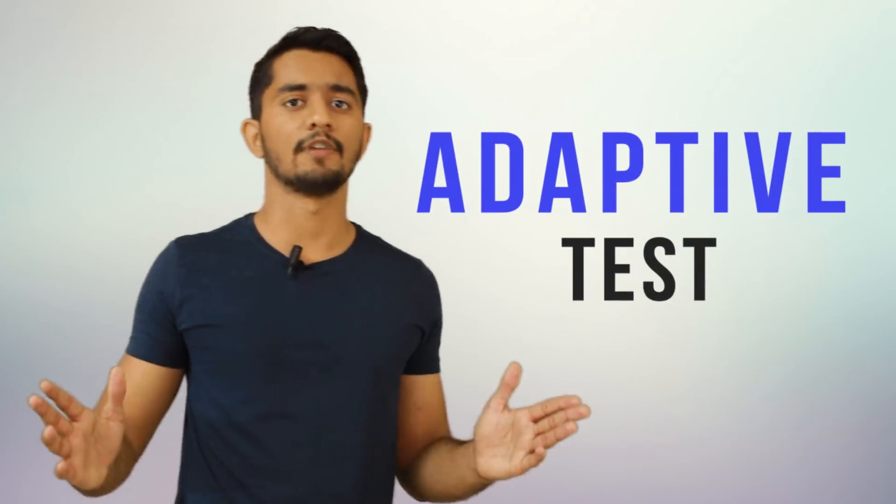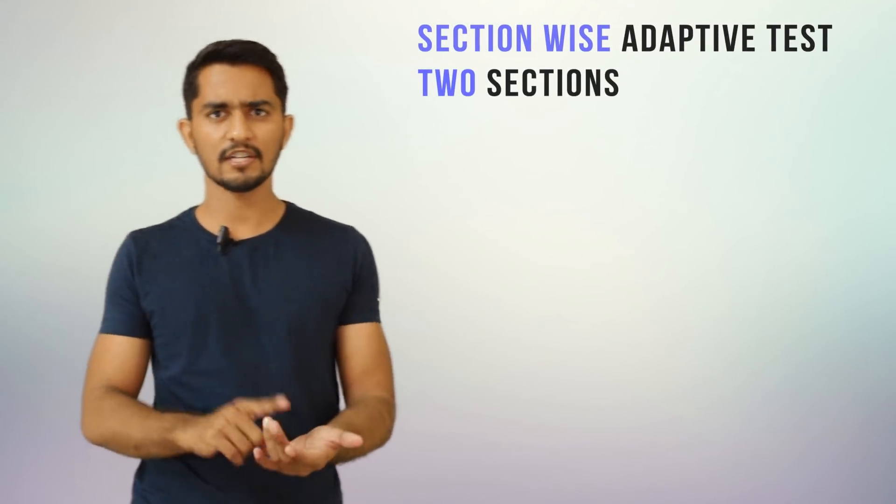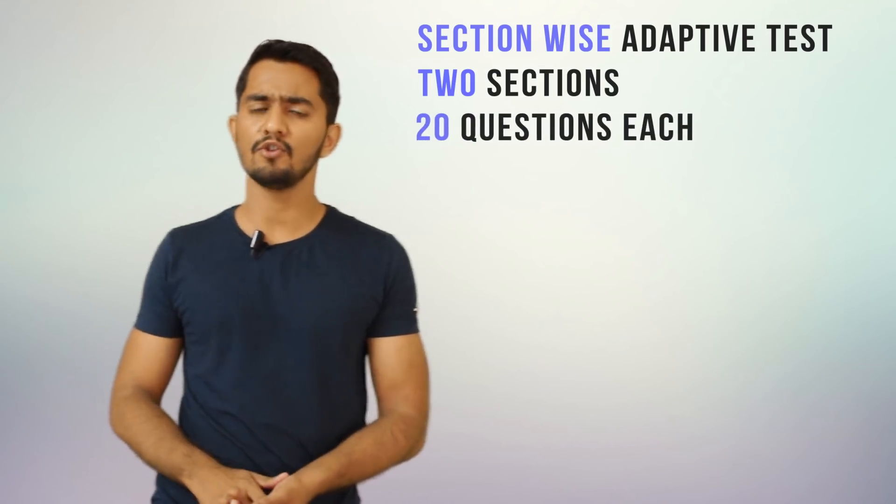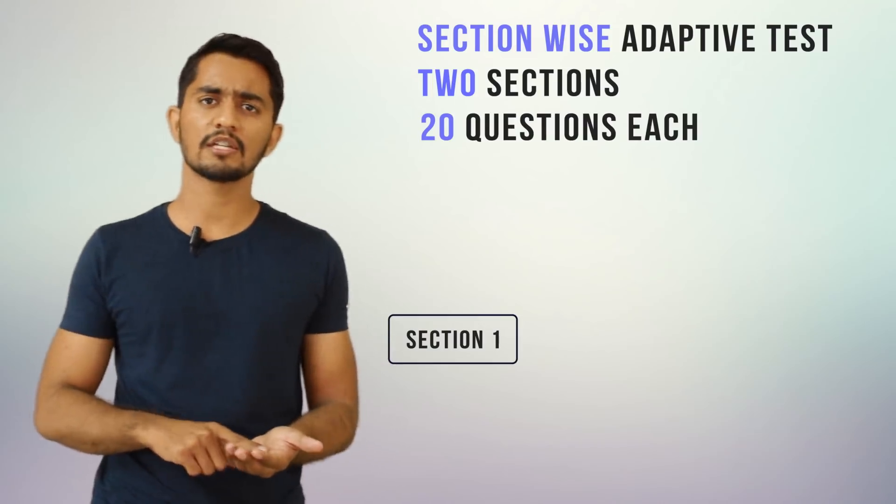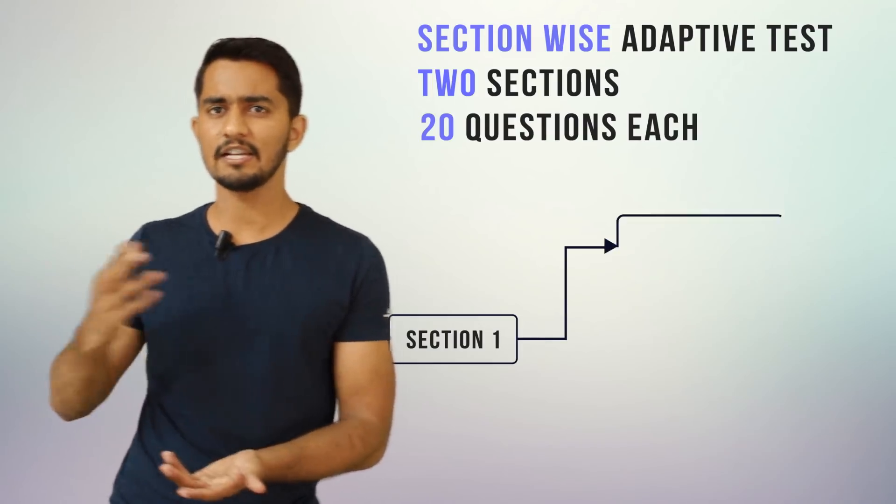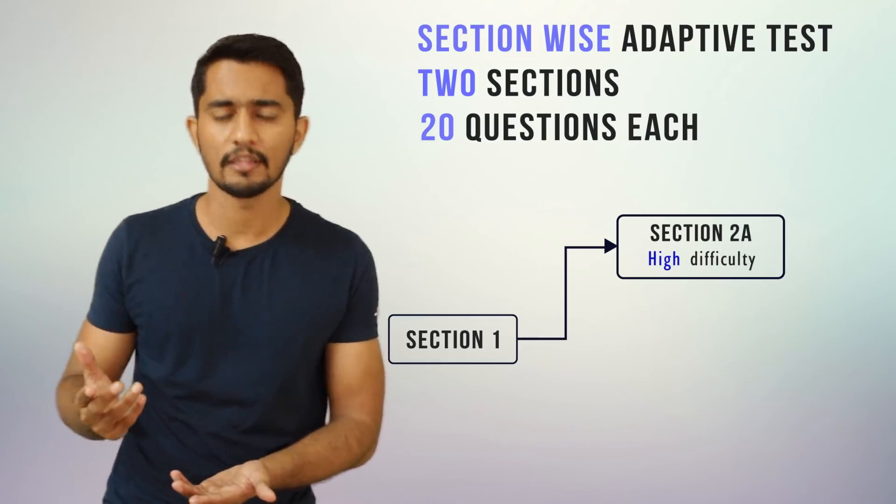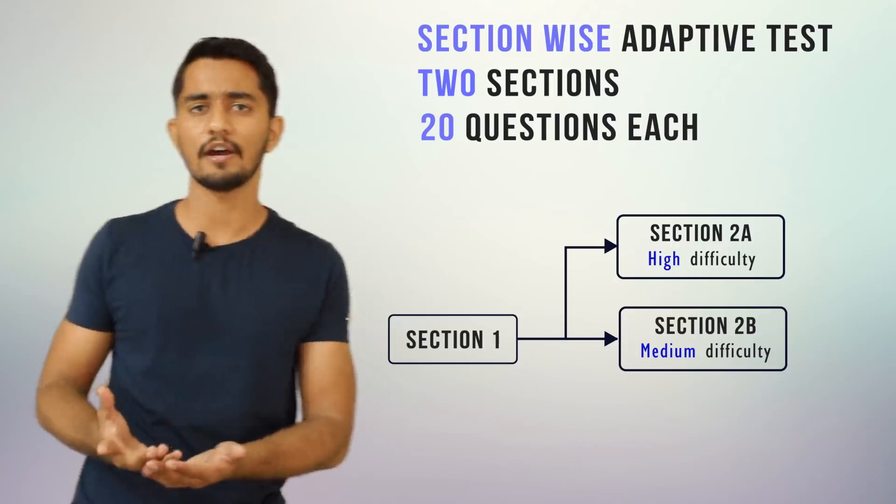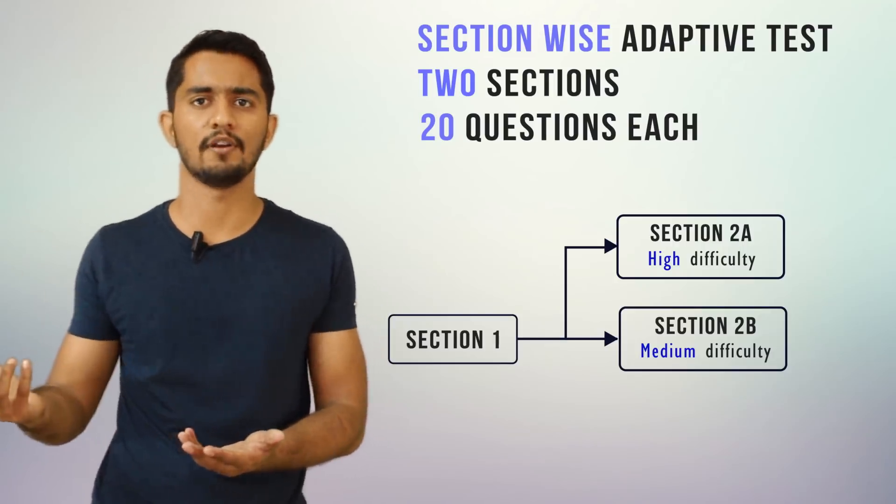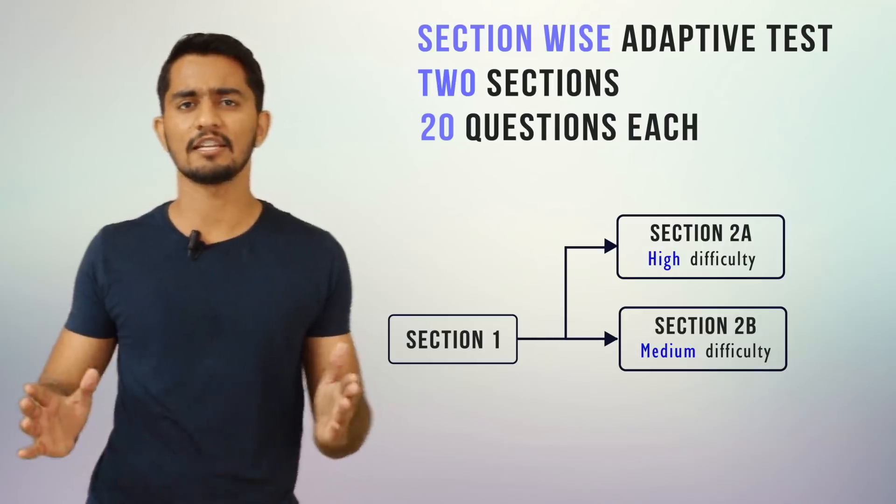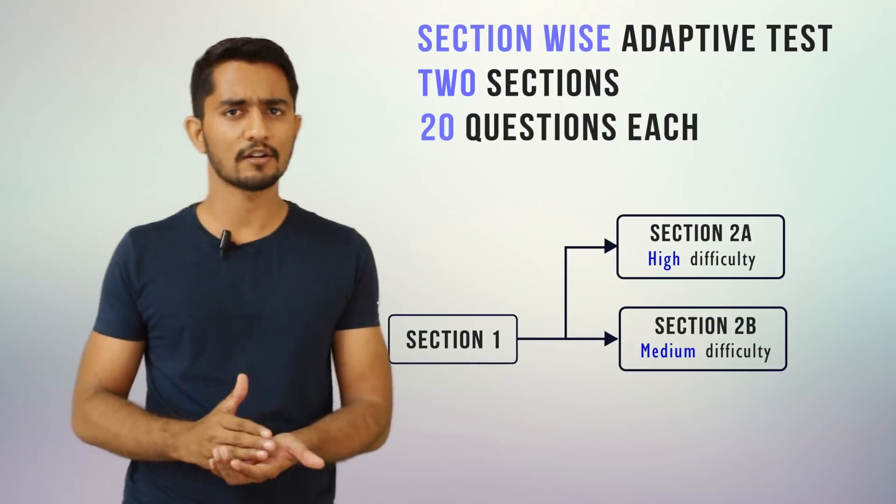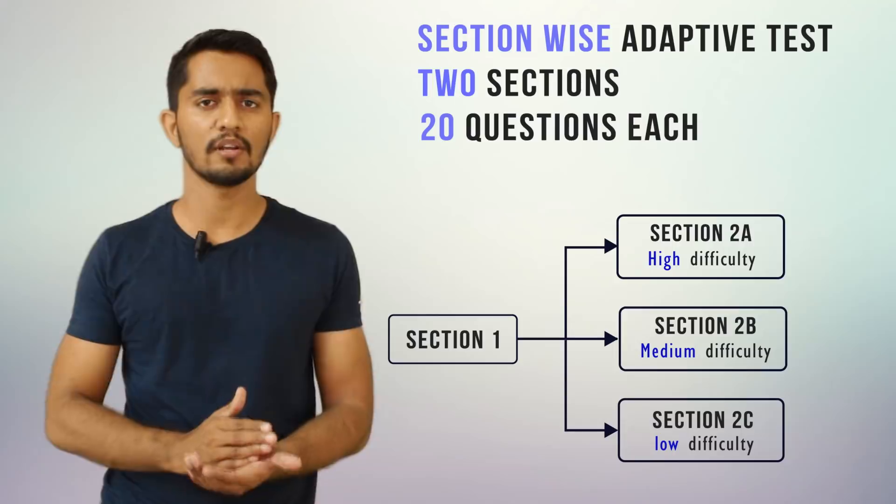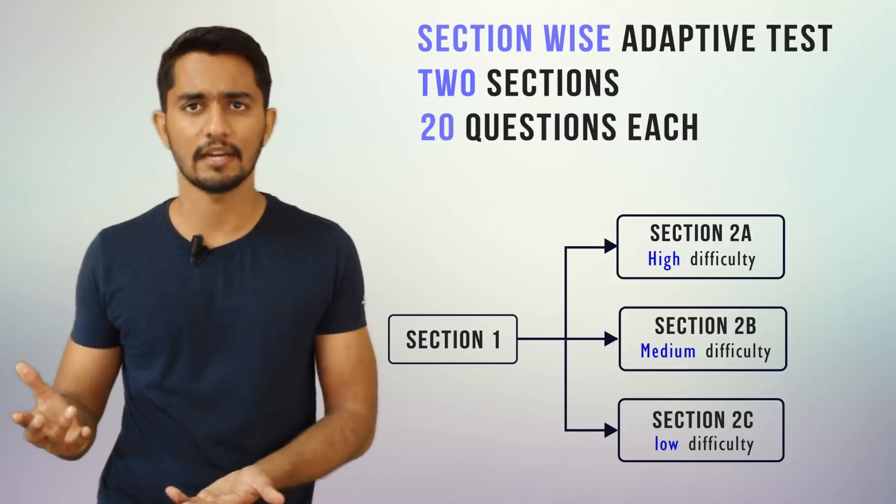Now let's understand GRE as an adaptive test. GRE is a section-wise adaptive test. There are two sections in quants. The first section is of moderate difficulty. In each section you will have to answer 20 questions. In the first section, which is of moderate difficulty, if you answer 16 or more questions correctly, the second section you will get would be harder, the difficult section. If you answer 10 to 15 questions correct, the second section would be of moderate difficulty. If you answer 10 or less correct, you will get a significantly easier set as your second section.